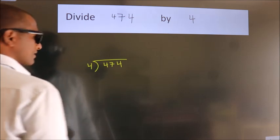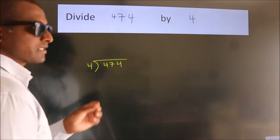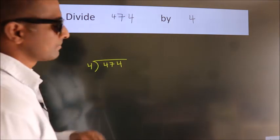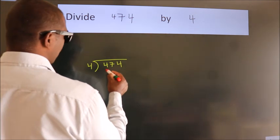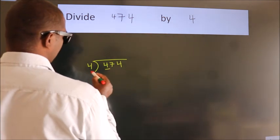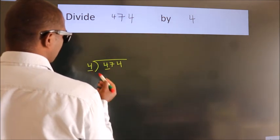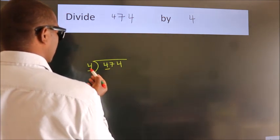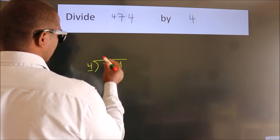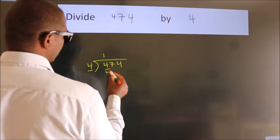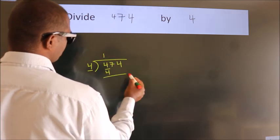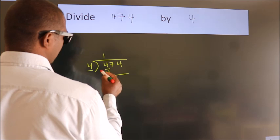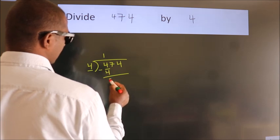This is your step 1. Here we have 4, and here 4. When do we get 4? In the 4 table: 4 once is 4. Now we should subtract, we get 0.